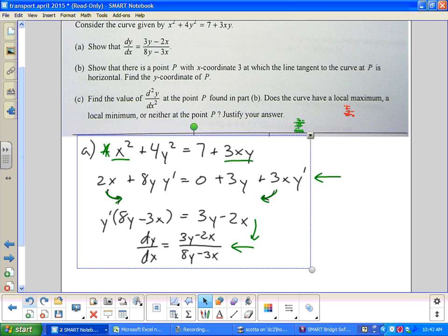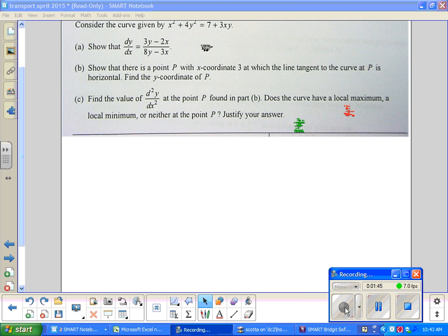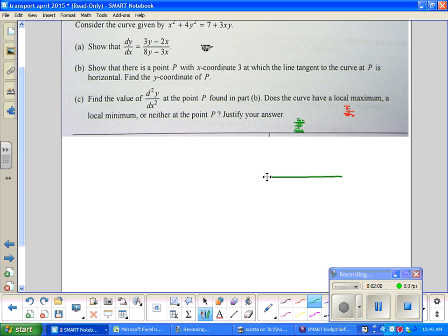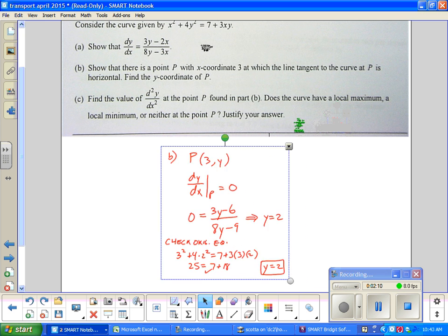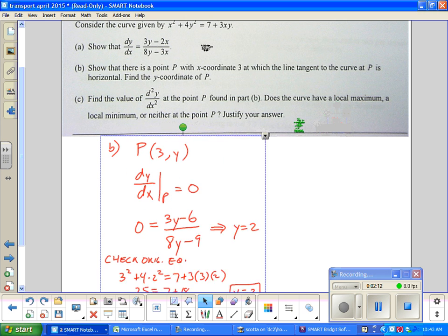Letter A. I'm going to move this back. Letter B says show that there's a point P with an x coordinate 3 at which the line tangent to the curve at P is horizontal. Find the y coordinate. First of all horizontal. We've got a picture of the horizontal line. We know the derivative of a horizontal line is 0. So I know y prime equals 0. And I know the point is 3 comma some value. And I think that's what I started on letter B.